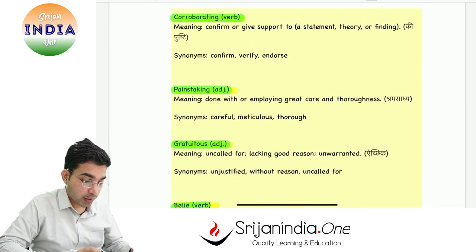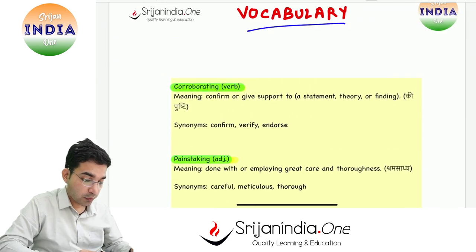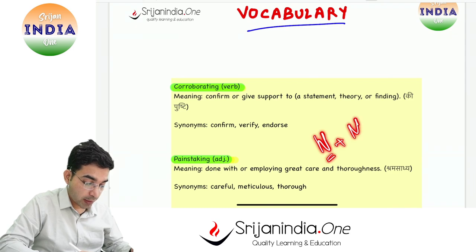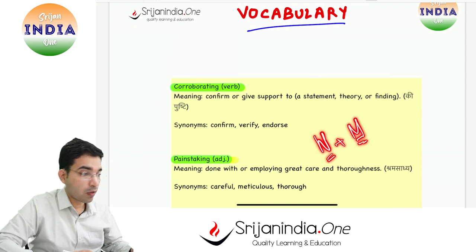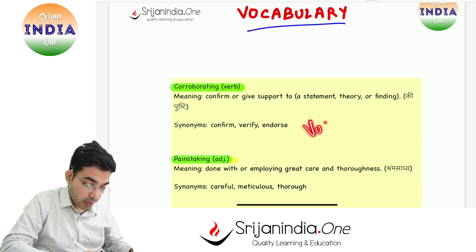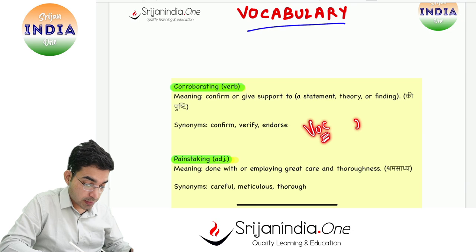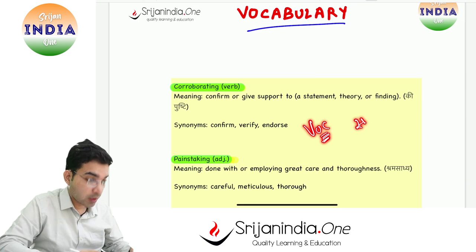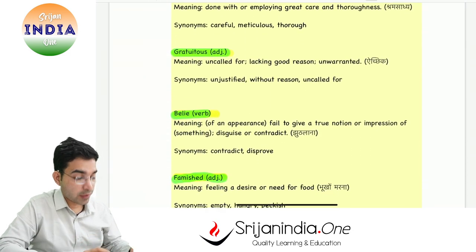Yeh vocabulary hai aaj ke liye. If you come across any other important word, write down that word along with its meaning in the comment section down below. Vocabulary achhi hona bahut zaroori hai — sateek shabdon ka prayog is very very important.